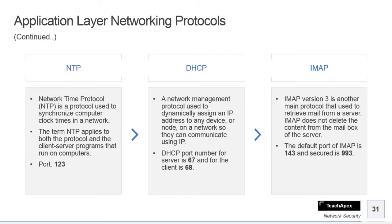Next we have DHCP — Dynamic Host Configuration Protocol. It is for dynamically allocating IP addresses to devices connecting to your network. It's basically a network management protocol designed to dynamically assign an IP address to any device or node on a network so they can communicate using IP.